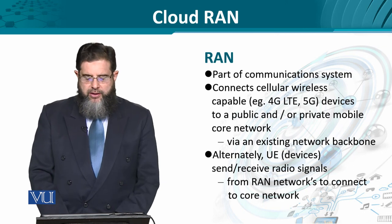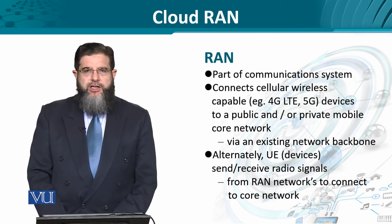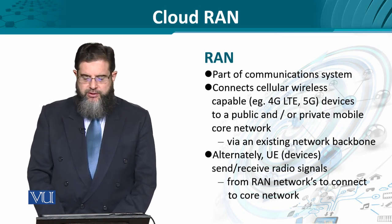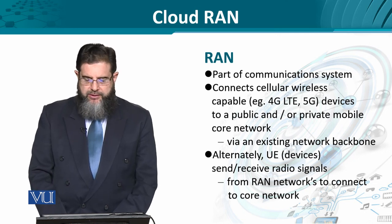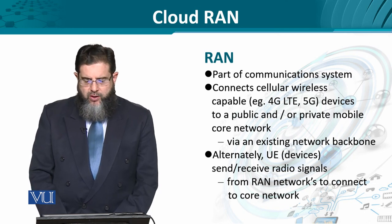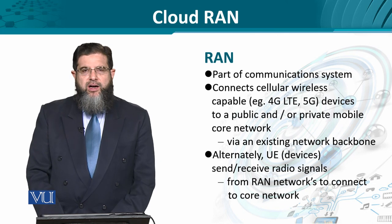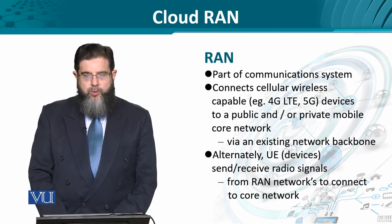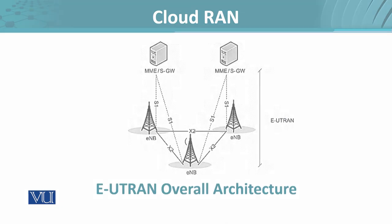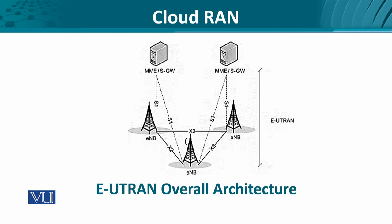Classically, the radio access network is part of the communication system that provides connectivity in 4G and 5G environments to the user equipment, and in turn allows the backhaul connectivity to be available to the user equipment. We can think of the user equipment sending and receiving wireless signals to the radio access network, which then provides wired connectivity to the core network. This is an overview of the classical understanding of the evolved UMTS Terrestrial Radio Access Network.